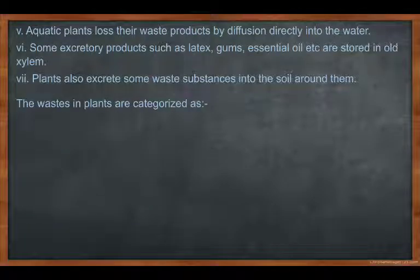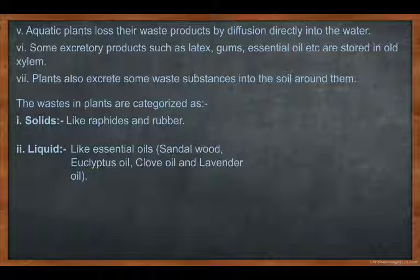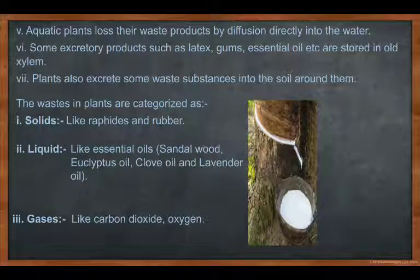The waste products of plants can be categorized. Solid waste products: rapids (the white layer on the surface of fruit made up of calcium oxalate) and rubber. Liquid waste products: oils — wood oil, eucalyptus oil, rubber oil, and lavender oil — these are waste products of plants. Gaseous waste products: carbon dioxide and oxygen. During photosynthesis, plants remove oxygen as a waste product, and during respiration at night they remove carbon dioxide.